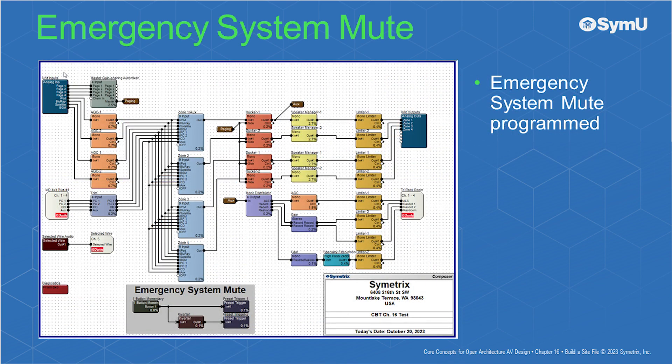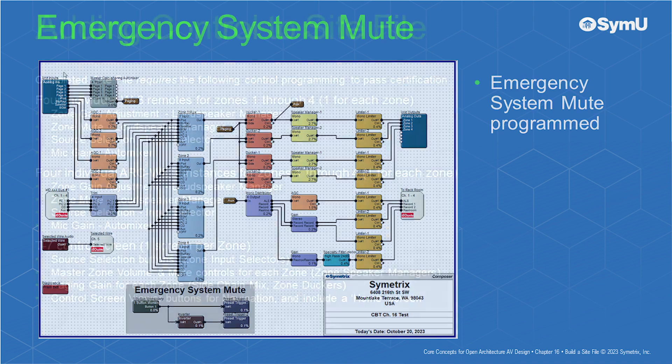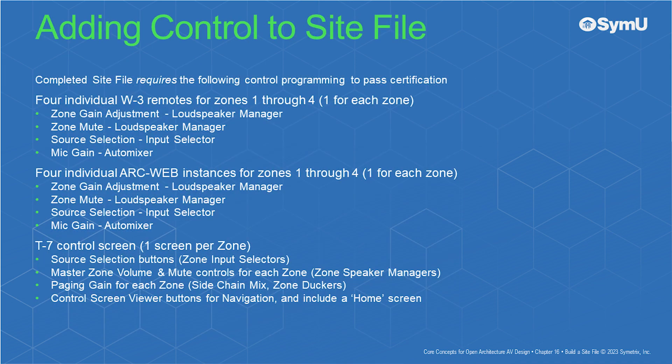And that's it! Your site file is now complete and ready for control programming. Take a break if needed, double-check your module placement and wiring, and let's continue. Adding system control in your site file is both powerful and critical for a positive end-user experience. While adding control to this site file, don't hesitate to revisit previous chapters to refresh on certain concepts or processes. Your completed site file must include the following control programming for a passing grade.